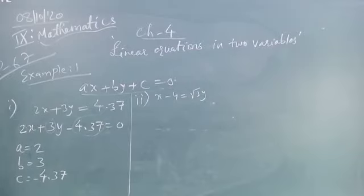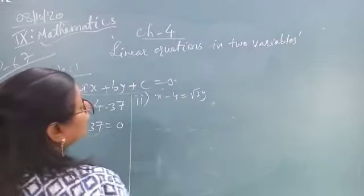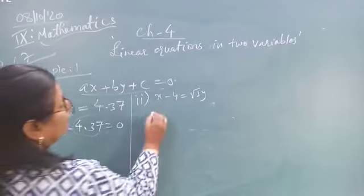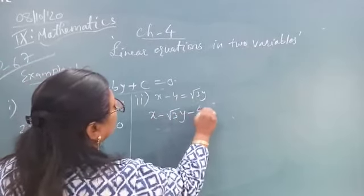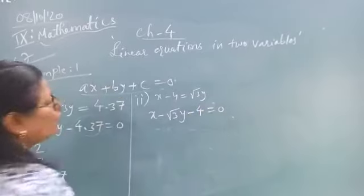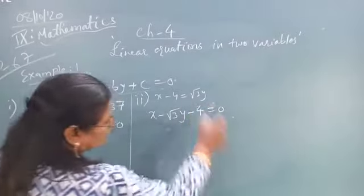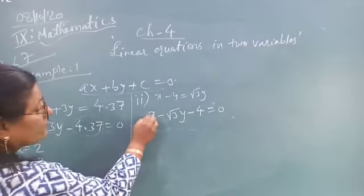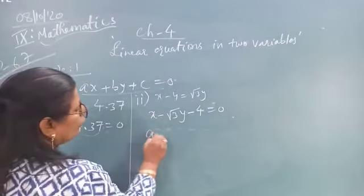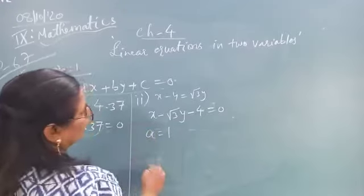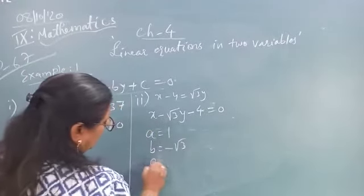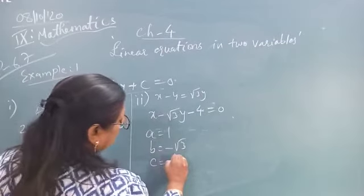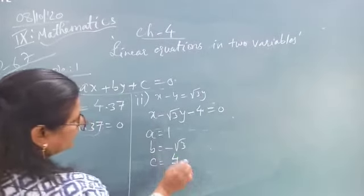Now see equation number 2. First you convert it into the standard form: X minus root 3Y minus 4 is equal to 0. First the X, then Y, then the constant. Nothing is given for the coefficient of X, so we consider it 1. What is B? Minus root 3. And what is C? That is minus 4.